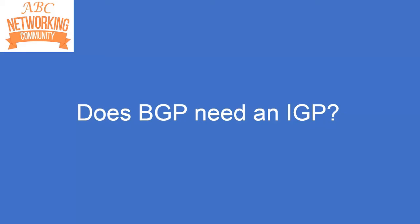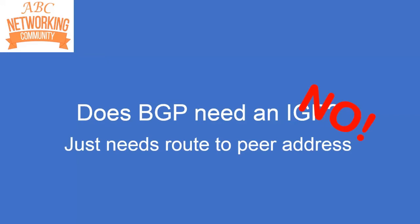I get the impression that it's just an accepted model, especially with iBGP, that people put their IP addressing on their Leaf-Spine nodes, turn on OSPF, and then run BGP over the top of it. Well the answer is no — BGP doesn't need an IGP underneath it. It just needs a route to the peer address. So it's not the IGP itself; it's the function that the IGP is performing that's required.